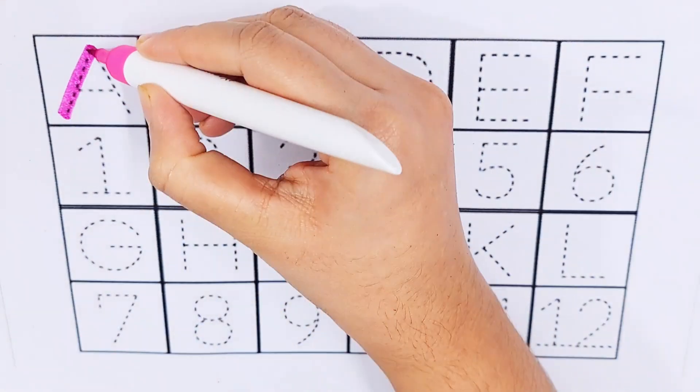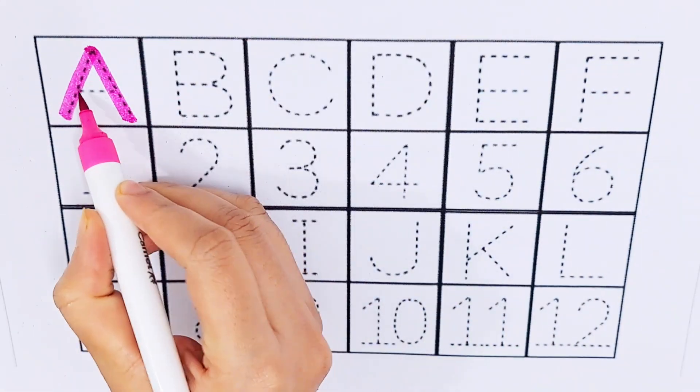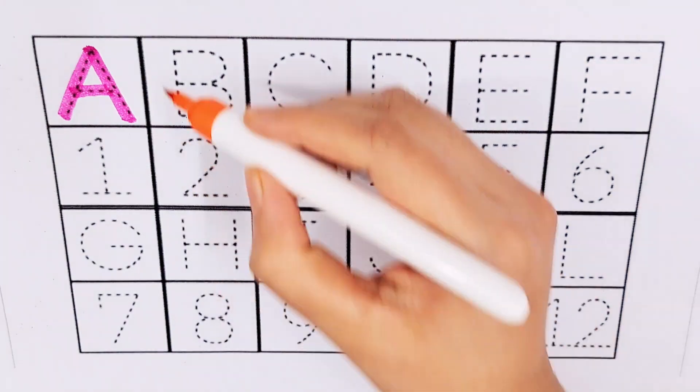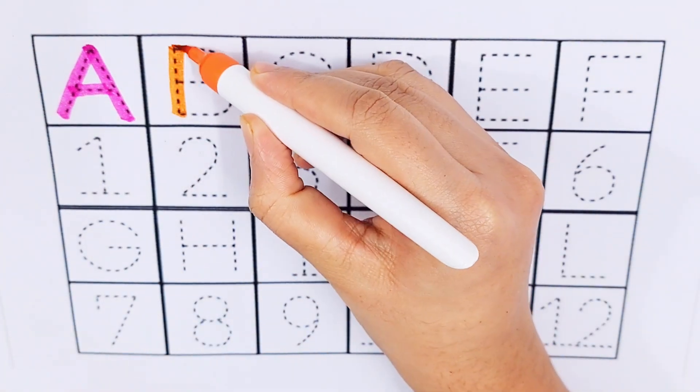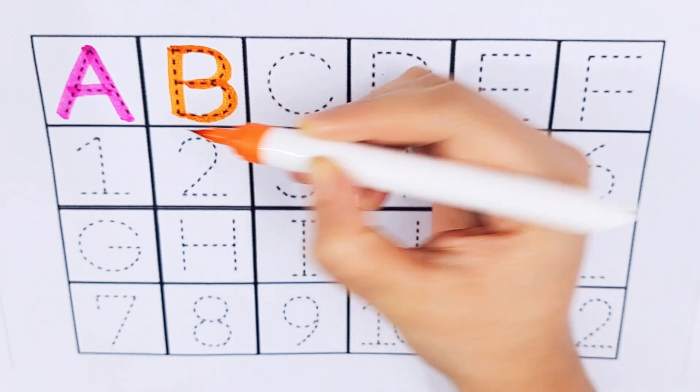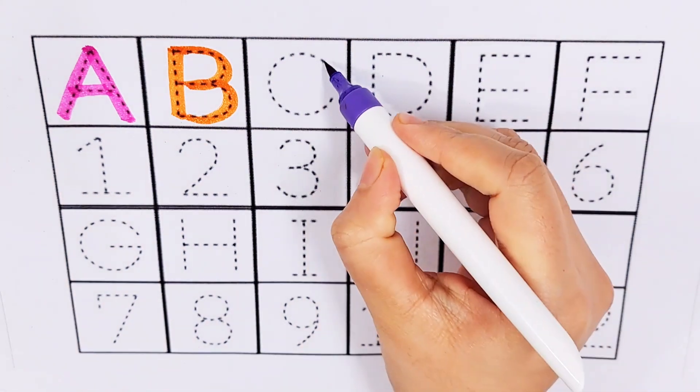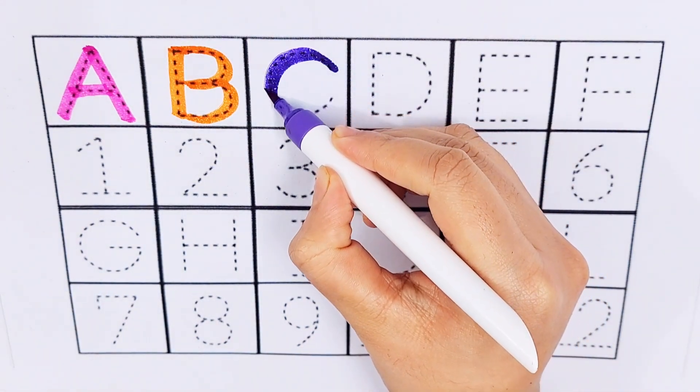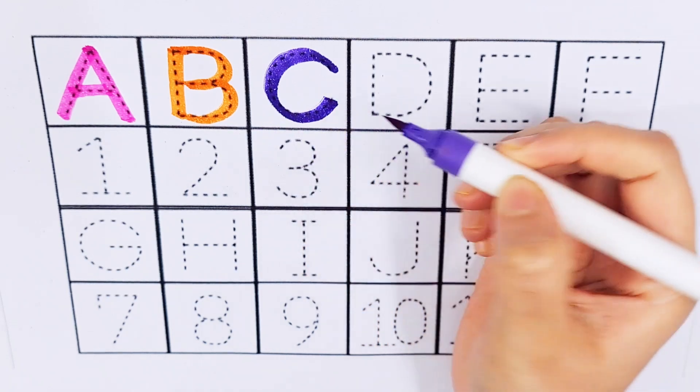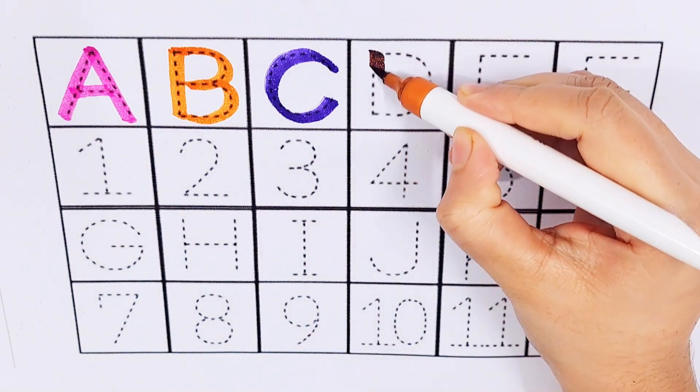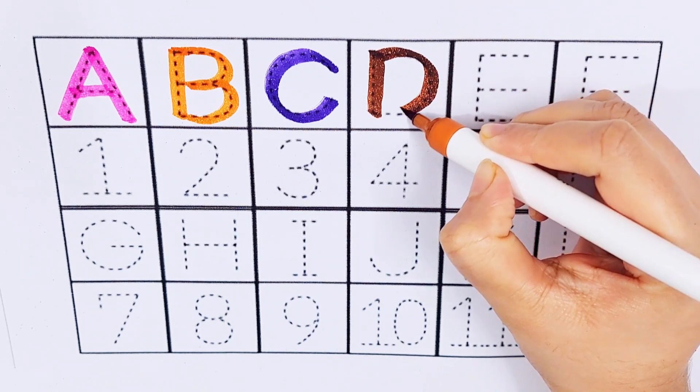A, A for ant. B, B for box. C, C for car. D, D for dog.